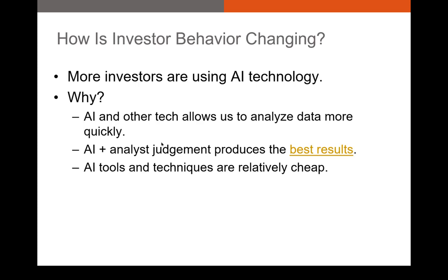If you're looking for an answer to what is better — just letting AI do the work, or just using analysts — the truth is there's some pretty good evidence out there that the best way to select stocks is to use AI resources and also analyst judgment. There's a link to the most recent paper, which I believe just got published in a very high-end academic journal. Essentially, AI is becoming prominent for good reason, and your best analysts are incorporating AI into their decision making process. We should expect that to be the case for a very long time to come.